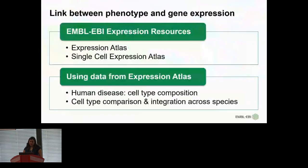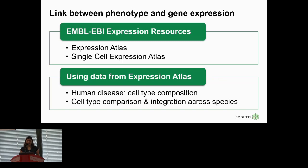Just to give you a little idea of how this talk is going to go: first I'm going to talk about the expression resources that my team develops. My team's role is really twofold — to deliver the services of Expression Atlas and Single Cell Expression Atlas on one hand, and on the other hand to do research and investigate how we can use this data to link gene expression and phenotype. We do that in two different ways: looking at human disease and cell type composition in disease cohorts, and comparing cell types across different species.